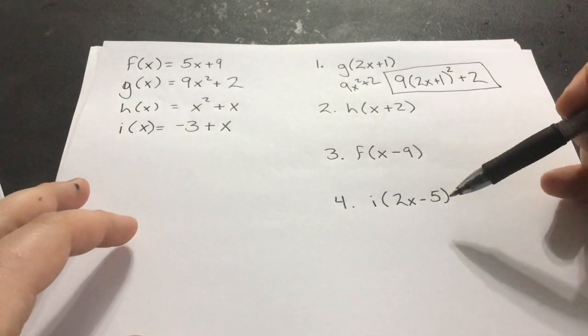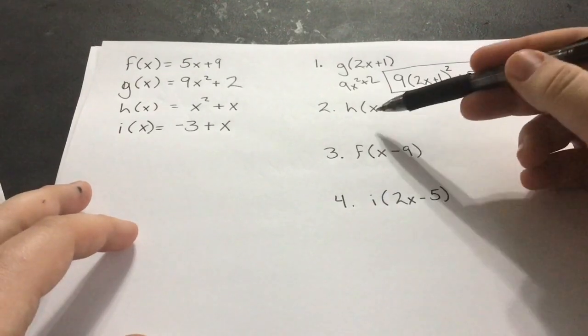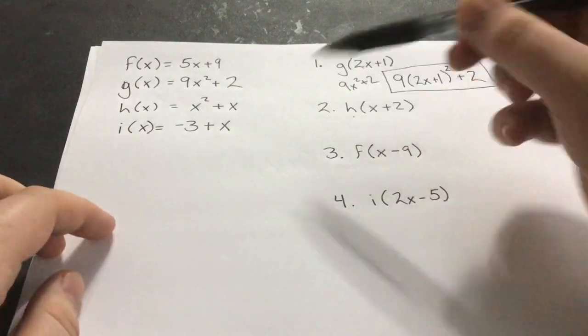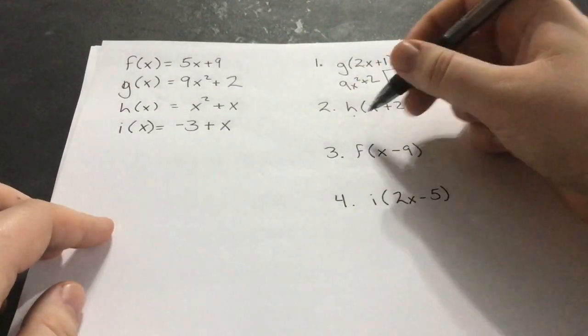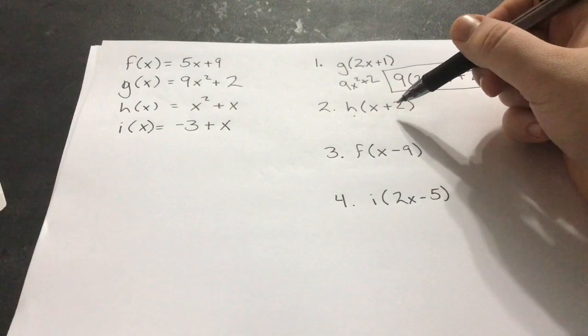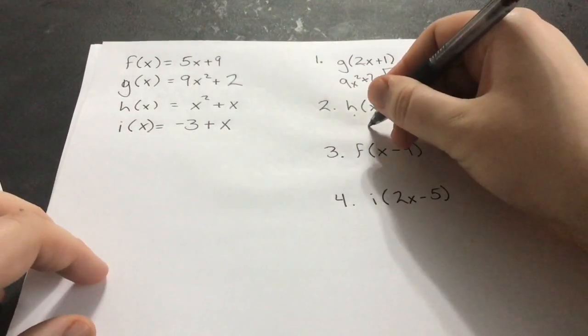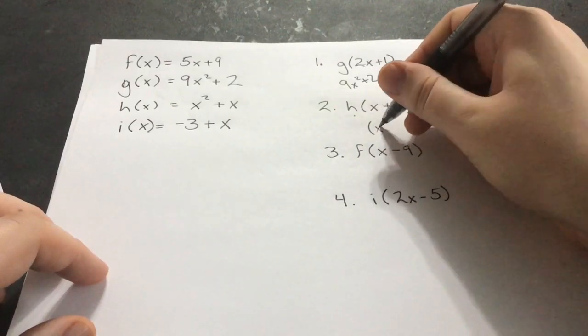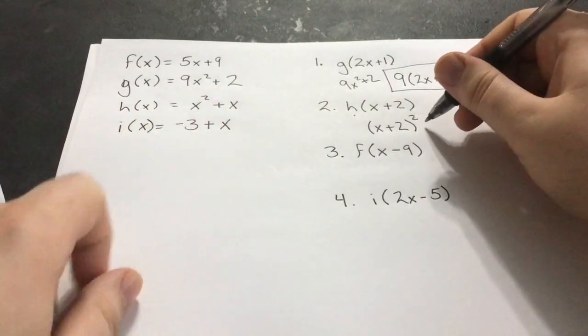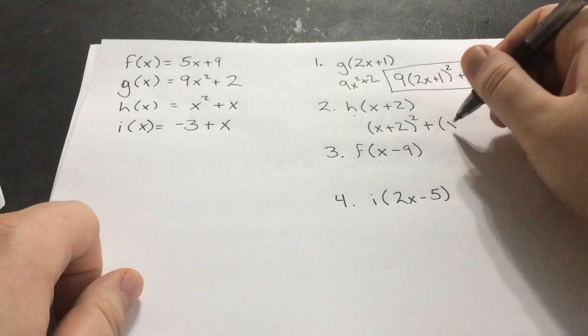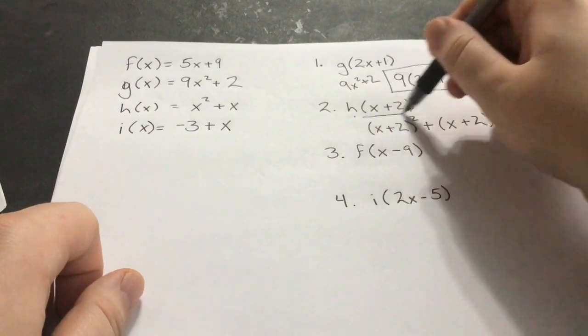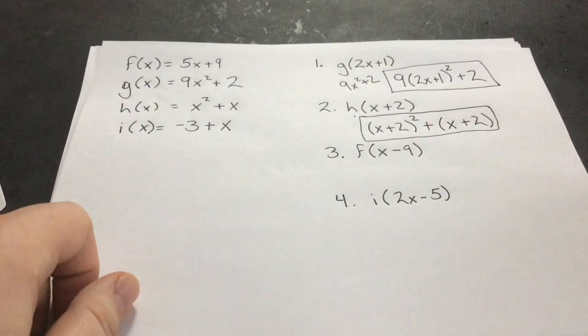So we're going to do that for all three of these others as well. So h of x plus 2. So we first identify h. You see that right here? x squared plus x. So then we will replace the x's, every instance of x's, not just the first one, but every one, with x plus 2. So I'm going to do that here. Instead of writing x squared, I'm going to replace that x with x plus 2 squared, and then it has plus x, so plus, and then I'll replace that second x again, x plus 2. And that is what the substituted in version of h of x plus 2 looks like.